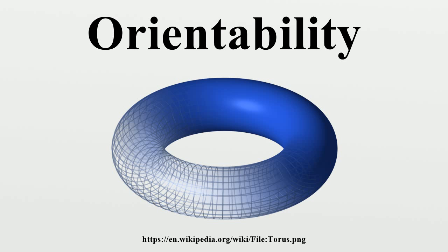If such a normal exists at all, then there are always two ways to select it: n or minus n. More generally, an orientable surface admits exactly two orientations, and the distinction between an oriented surface and an orientable surface is subtle and frequently blurred. An orientable surface is an abstract surface that admits an orientation, while an oriented surface is a surface that is abstractly orientable and has the additional datum of a choice of one of the two possible orientations.